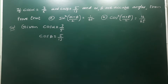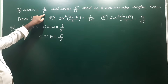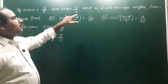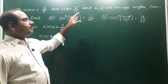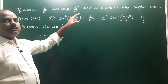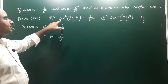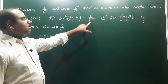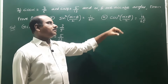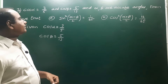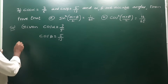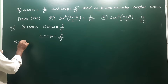Next problem: if cos α = 3/5 and cos β = 5/13, and α and β are acute angles, lying between 0 and 90 degrees, then prove that sin²((α−β)/2) = 1/65. The second part of the problem is to prove that cos²((α+β)/2) = 16/65.